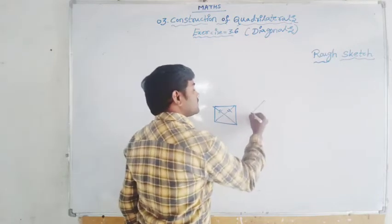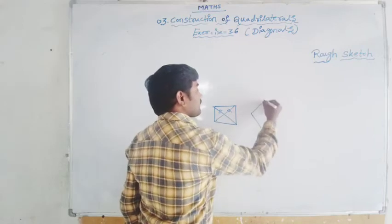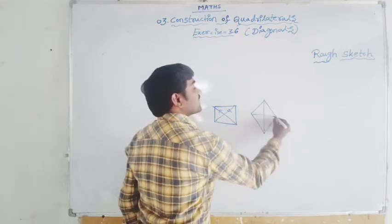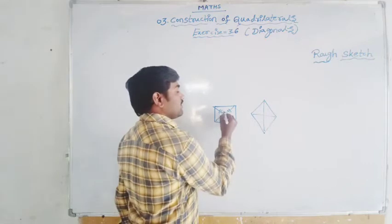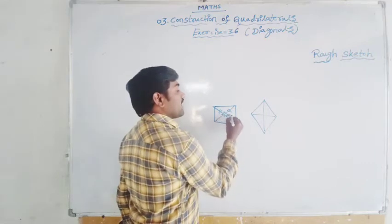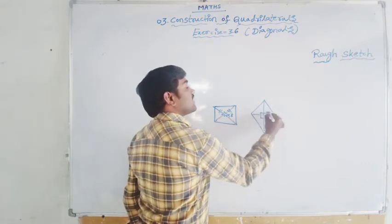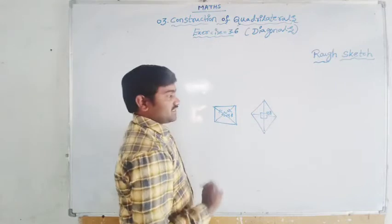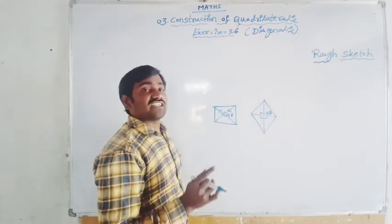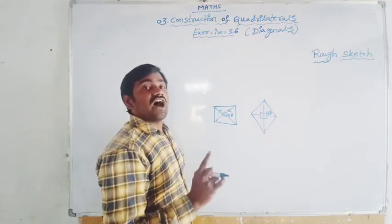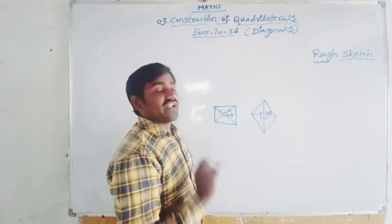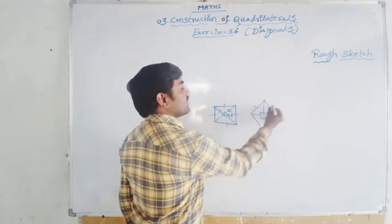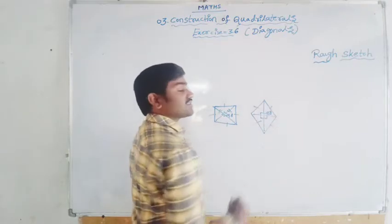In the rhombus, diagonals are not equal. But in the rhombus and square, diagonals are perpendicular bisectors. That means they intersect exactly at half of their total length at the angle of 90 degrees. And all the sides are equal in the rhombus and square.